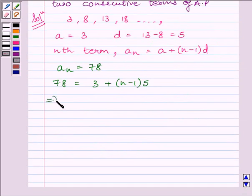This implies 78 minus 3 is equal to n minus 1 multiplied by 5. This further implies 75 is equal to 5 multiplied by n minus 1.